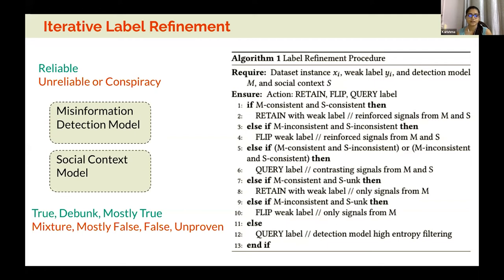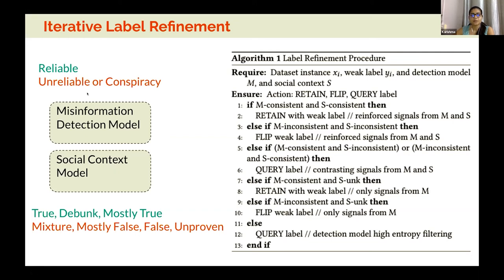The detection model is binarized because the input is the initial weak label — reliable, unreliable, or conspiracy — and we binarize the final expected label based on two separations. Human annotations cover the fine-grained classification for the subset sent for querying, giving finer-grained distinctions, while the model itself operates over the binarized categories shown on the slide.